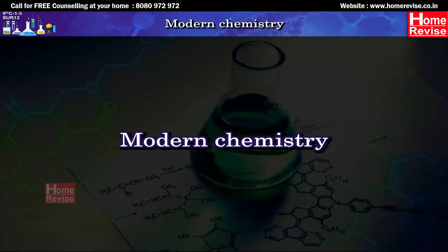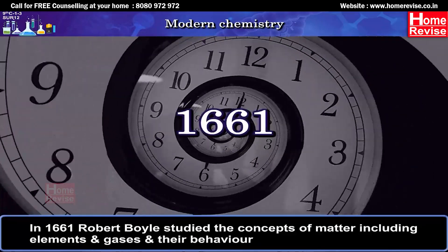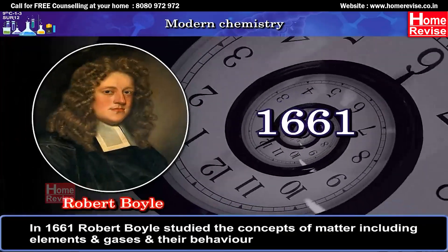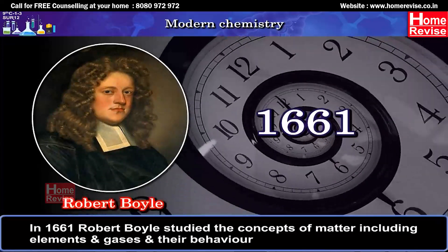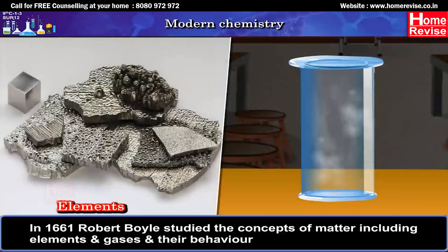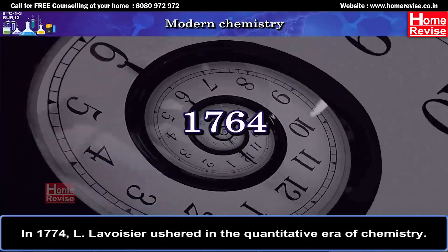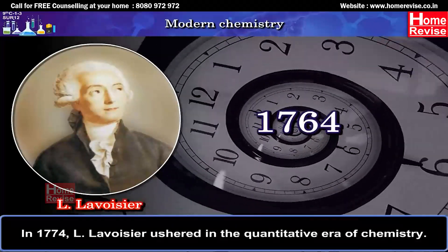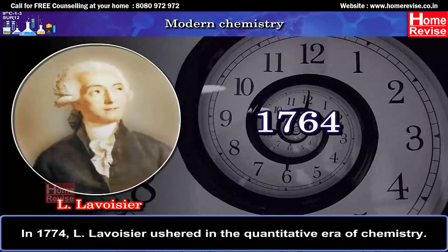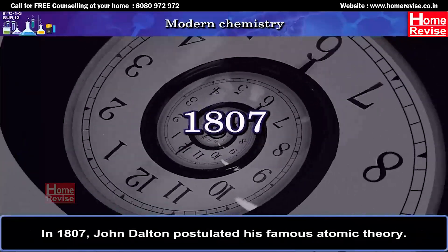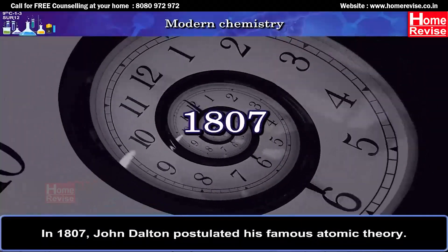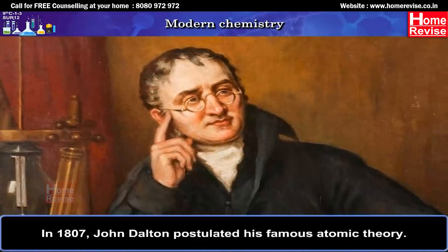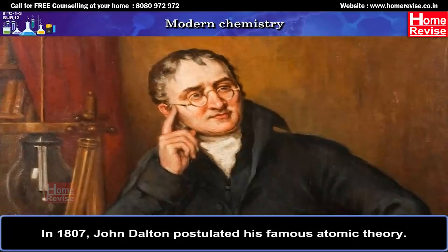Modern Chemistry. In 1661, Robert Boyle studied the concepts of matter including elements and gases and their behavior. In 1774, L. Lavoisier ushered in the quantitative era of chemistry. In 1807, John Dalton postulated his famous atomic theory.